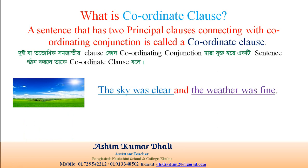Example: 'The sky is clear and the weather is fine.' Here, 'the sky is clear' and 'the weather is fine' are both principal clauses. Jokhan duti principal clause coordinating conjunction dara jukt hoye ekti sentence goren kare, tokhan take coordinate clause bale. Arup sentence ke coordinate clause bale.